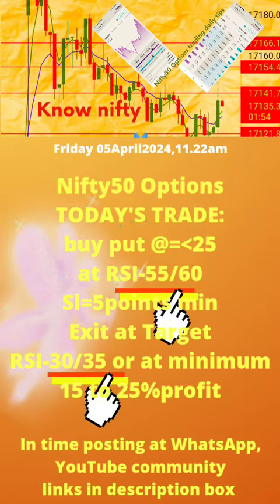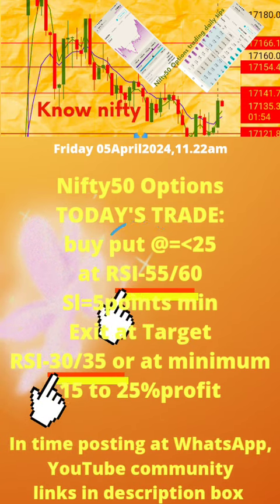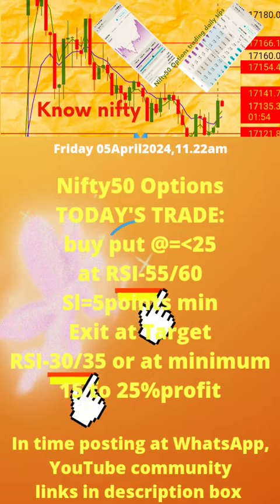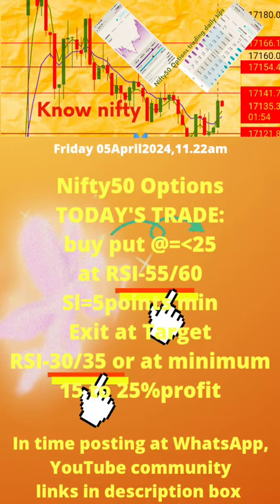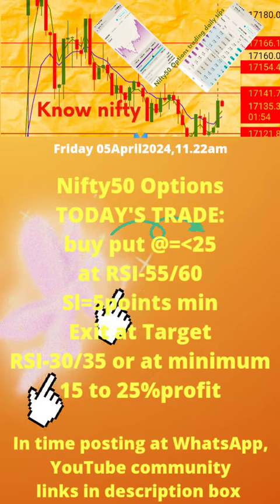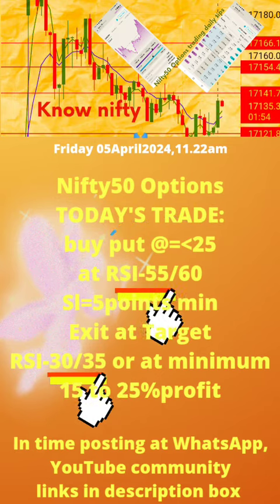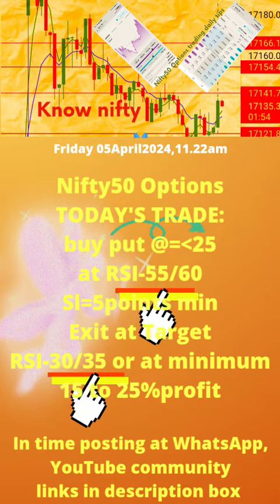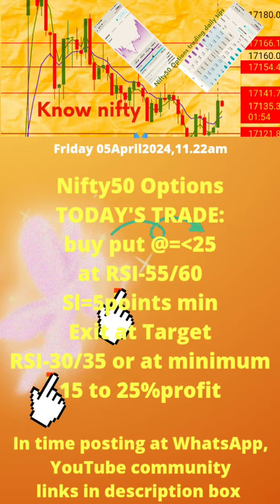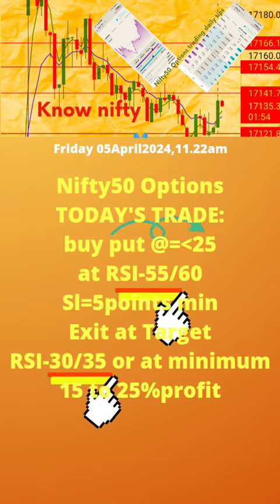Please note: 1. Today's time of post is also mentioned. 2. Buy put or call off strike price with premium value equal to or less than 25 at RSI value updated daily. 3. Apply stop loss of minimum 5 points. 4. Exit at target RSI value updated daily. Now take today's trade as per the updates in this page.